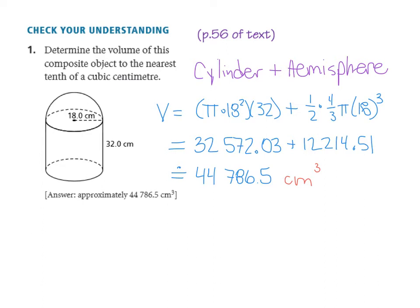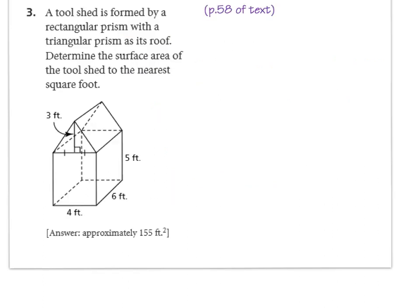This is a style of question that doesn't get easier without practice. So too many examples would be overwhelming, but let's look at one more. In this example, we're discussing a tool shed. And the question tells us that we have a rectangular prism combined with a triangular prism for the roof.